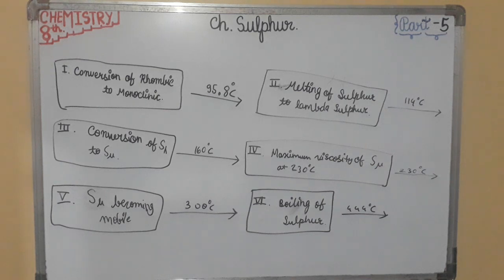Now next topic, that is chemical properties of sulphur. There are three reactions: first is reactions with non-metals, second is reactions with metals, third is reactions with acids and alkalis. We will learn them in next part, in part 6.